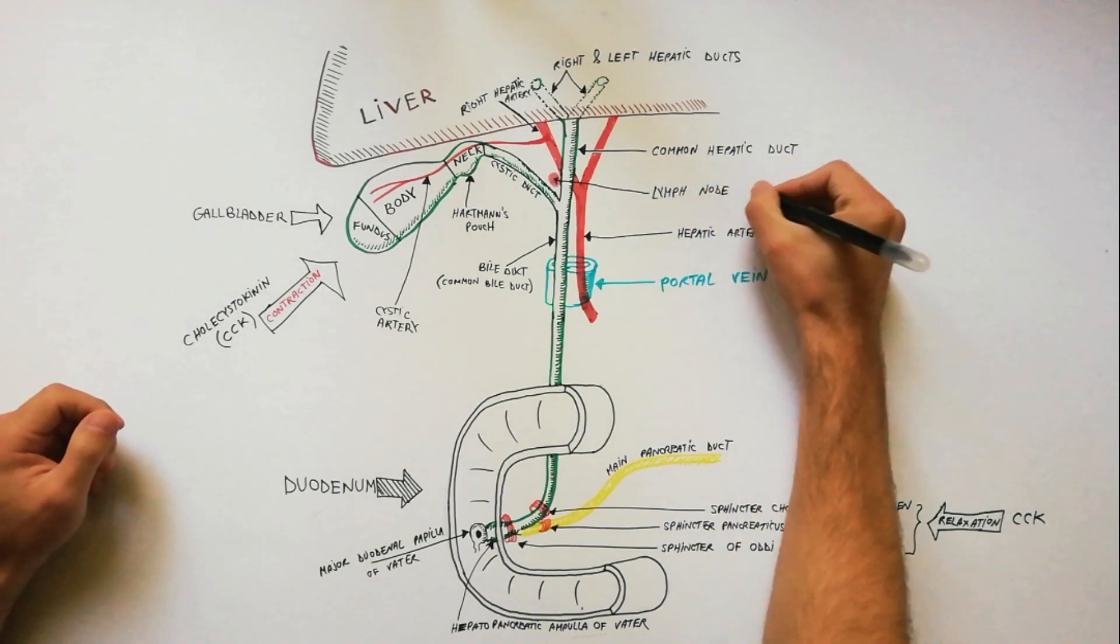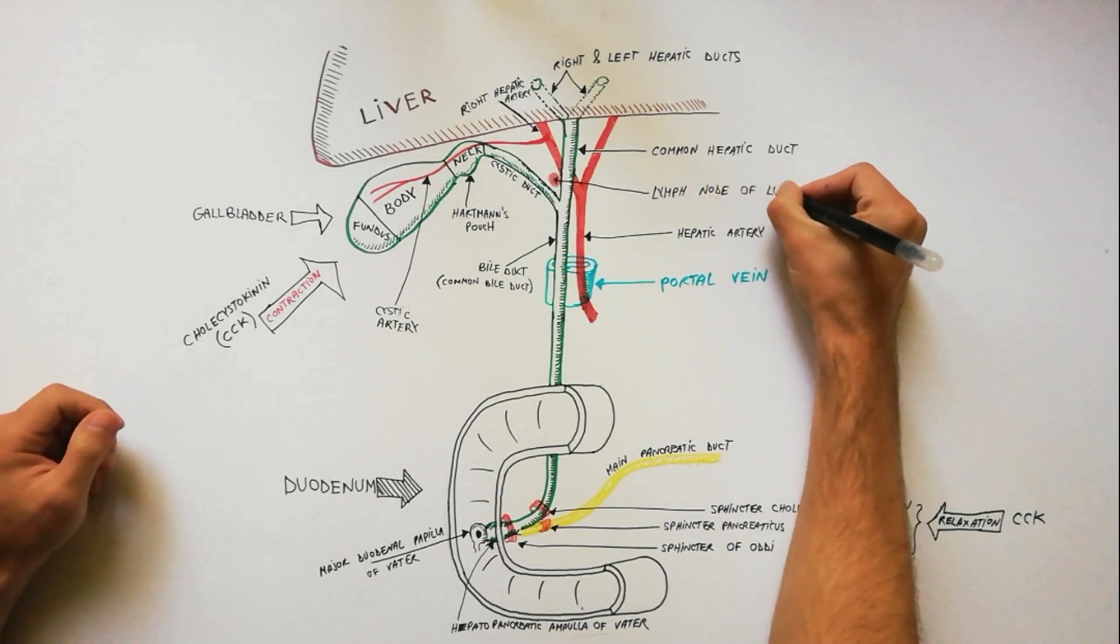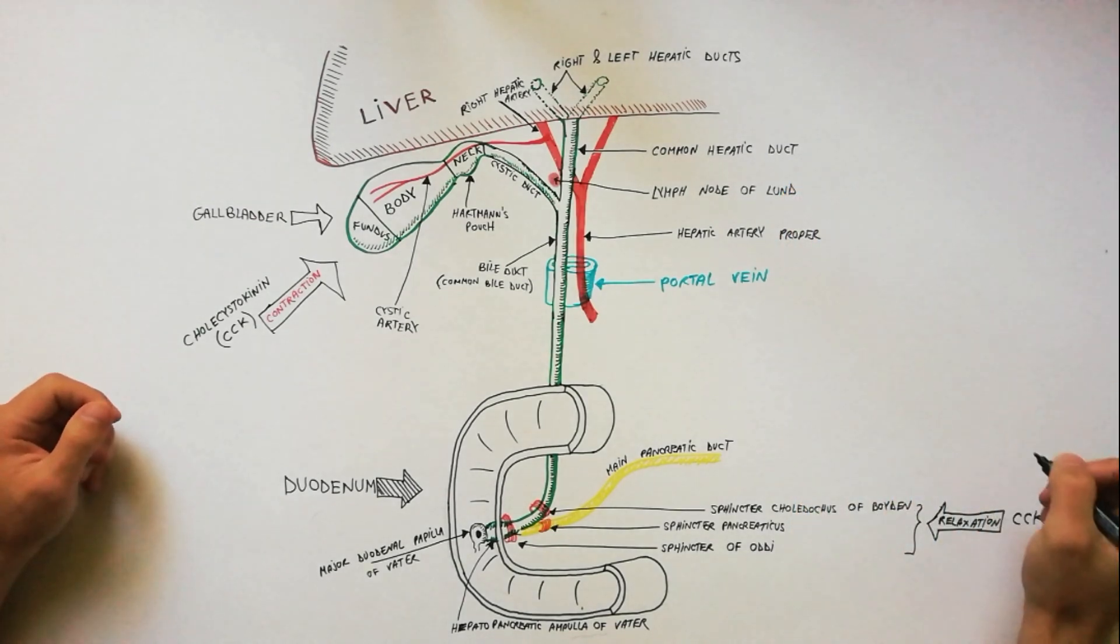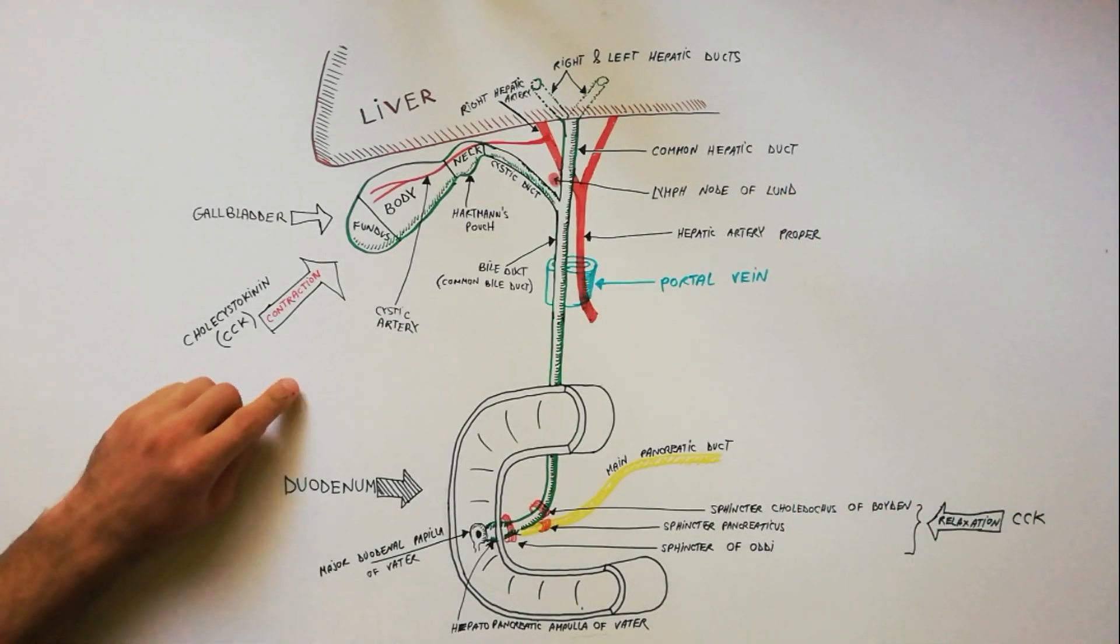The identification of Cystohepatic Triangle and its contents help the surgeon to locate the pedicle of gallbladder and its ligation in cholecystectomy.